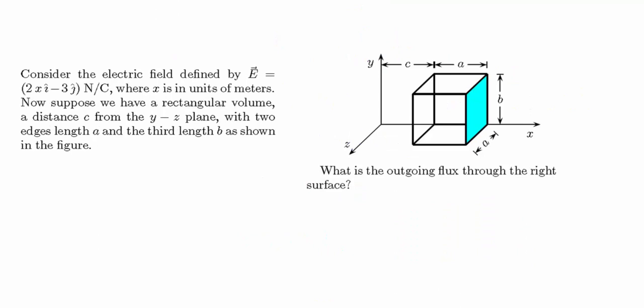The second problem is very similar to the first, except the electric field is more complicated and we're given numerical values. The electric field is given by the equation 2x î − 3 ĵ in unit vector notation. The x-component of the electric field is 2x, so it changes as x changes, while the y-component is a constant −3. At different values of x we get different strengths for the x-component — for example, if x is 5 then the x-component is 10 N/C.